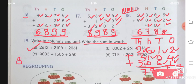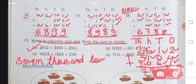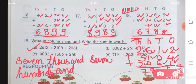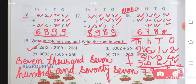Now how will we write the answer in words? We write it as 7,000 — since we are in the thousands place — then 700 hundred, and 77. So the answer in words is seven thousand, seven hundred and seventy-seven. This is your answer for number 1, part A.